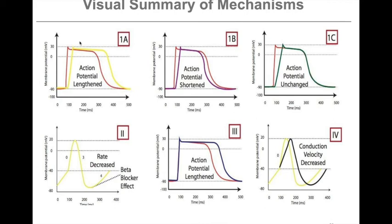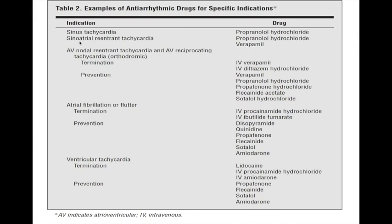By blocking potassium channels, the action potential gets lengthened in the center part of the curve, as shown in the purple line compared to the normal red line. Class 4 calcium channel blockers tend to affect the nodal action potential the most, because calcium influx is responsible for the increase in membrane potential in phase 0 of the nodal cells. This is blocked by calcium channel blockers, decreasing the conduction velocity. This table also shows examples of drugs used to treat conditions such as tachycardia or atrial fibrillation.